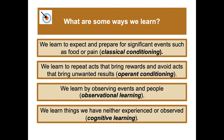Observational learning: we also learn by observing events and other people, copying them and incorporating their behavior into our own. And finally, cognitive learning — we learn things we have never experienced or observed. It's important to differentiate between the behavioral types of learning — classical and operant conditioning and observational learning — versus cognitive learning.